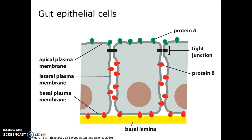Another job of the tight junctions is to keep bacteria from moving from the lumen of the gut into the bloodstream. Those tight junctions exclude bacteria from moving between the two cells. If bacteria got into the bloodstream, we have a term for that — it's called sepsis, or septicemia, and that can cause septic shock.